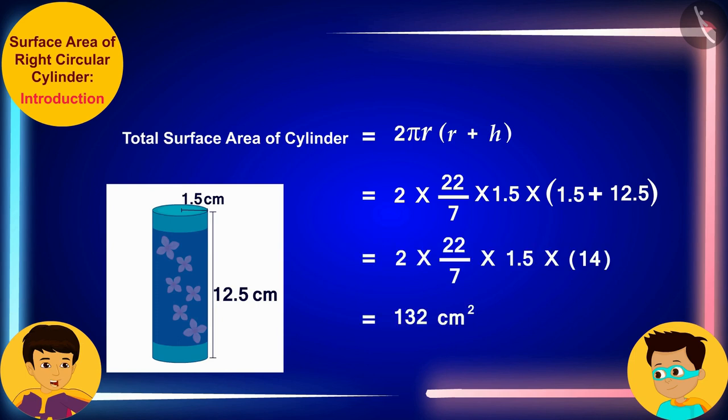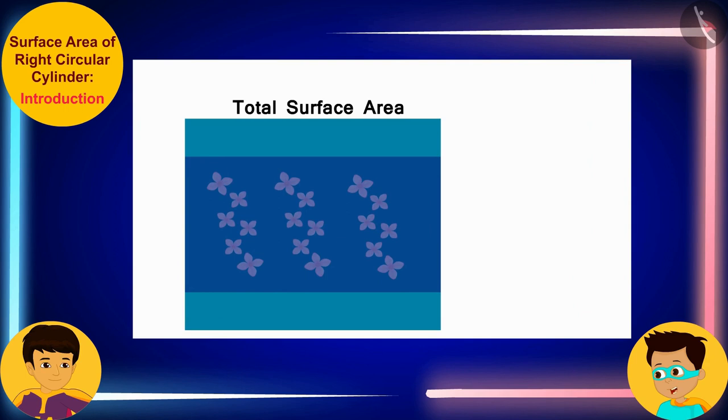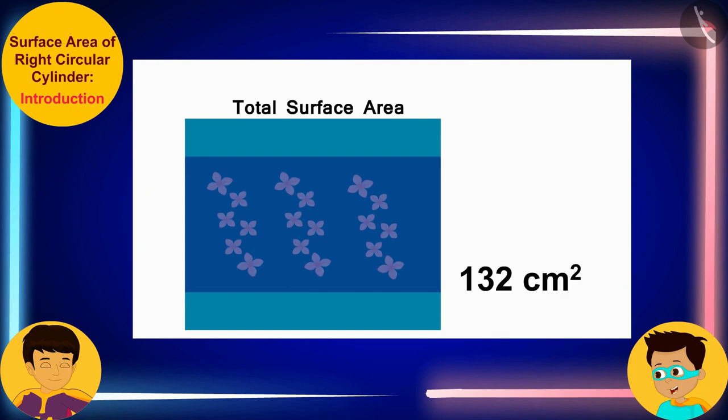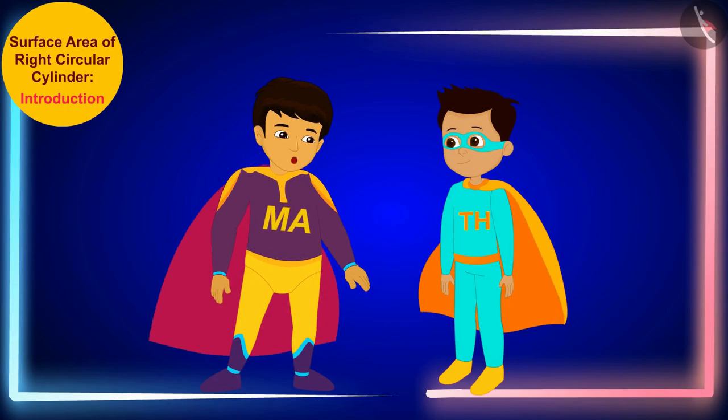Like this. Look Manas, because the paper used to make my cylindrical packet is equal to its total surface area, I would need 132 square centimeters of paper to make a cylindrical packet. Well done Thomas! Let us return to our world now.